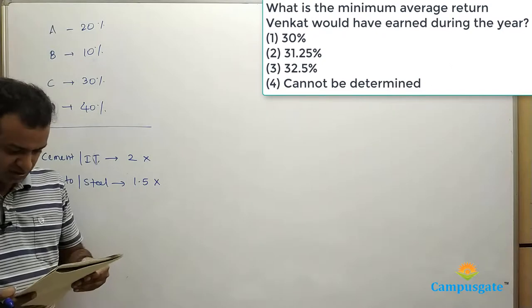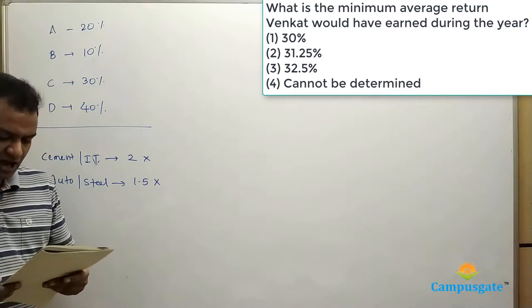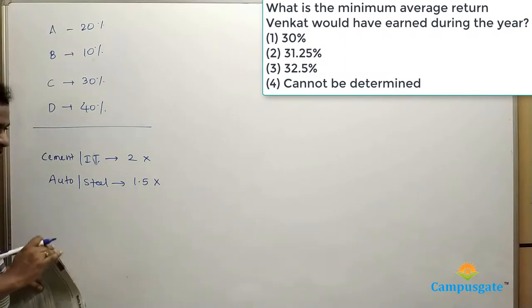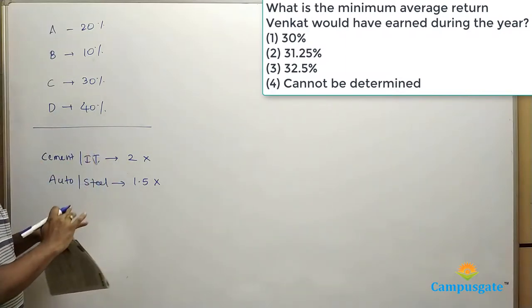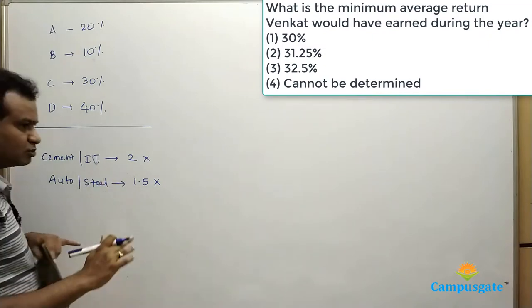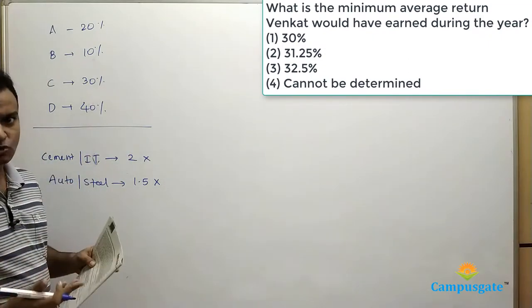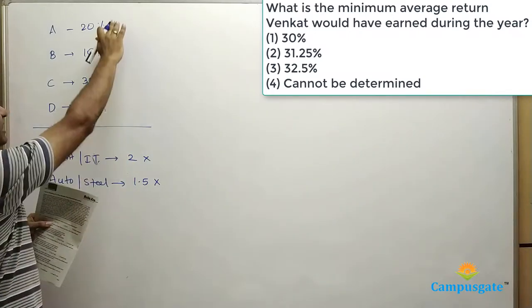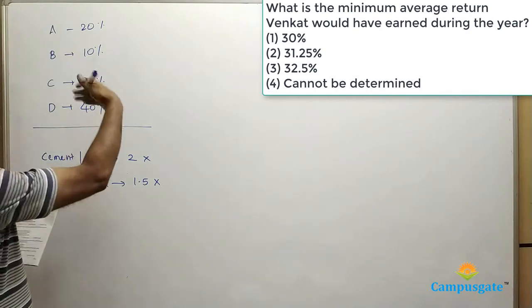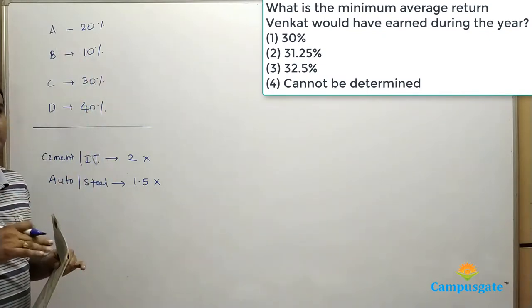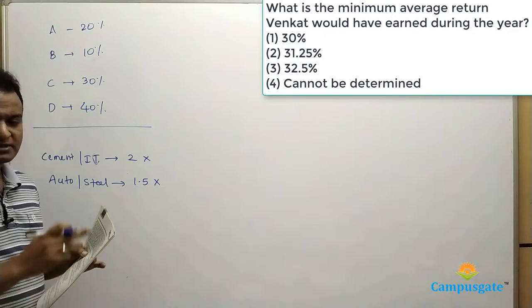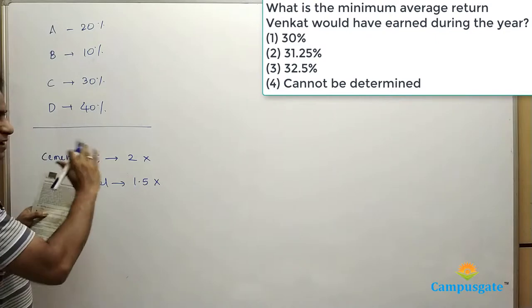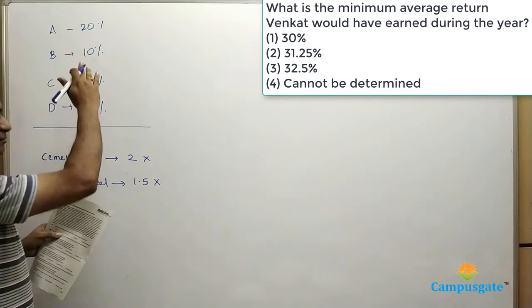What is the minimum average return Venkat would have earned during the year? We have to find the minimum average return. We have to consider that one company announced two times better return and another announced 1.5 times. It is also given that each share was priced at 100 rupees, but we can directly do these calculations using percentages with the weighted average formula.